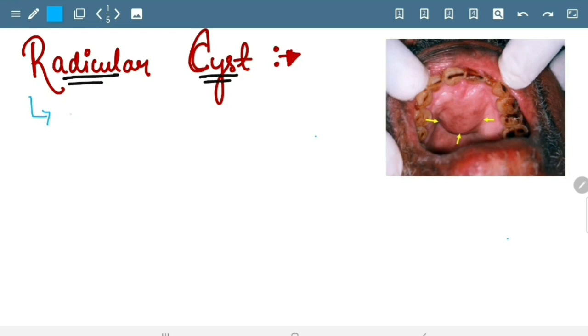COC, dentigerous cyst, and varicose carcinoma. So you can check them out on my YouTube channel or by the link which I had given in my description box. Okay, so let's start with the introduction of radicular cyst.